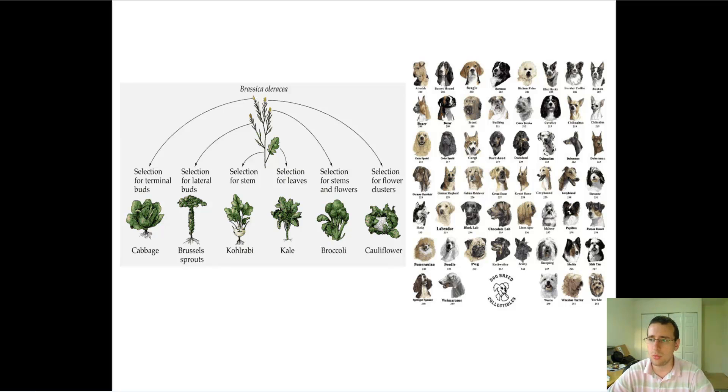Natural selection is similar to artificial selection. Artificial selection is just natural selection that humans do. We talked in the evolutionary theory lecture series about how humans have worked on selection to create all the different breeds of dogs and types of plants. For example, one plant gave rise to all those types of lettuce and greens: cabbage, kale, broccoli, cauliflower, kohlrabi, and brussels sprouts.